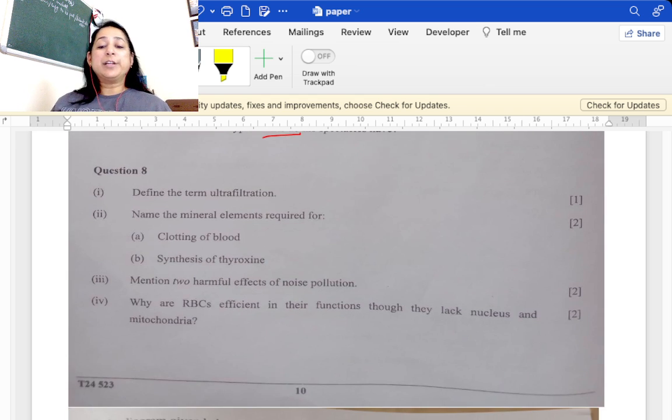Define the term ultrafiltration: filtration of harmful and useful substances both through glomerulus is known as ultrafiltration. We call it ultra because everything passes out. Name the mineral requirement for clotting of blood: calcium. And synthesis of thyroxine: iodine.